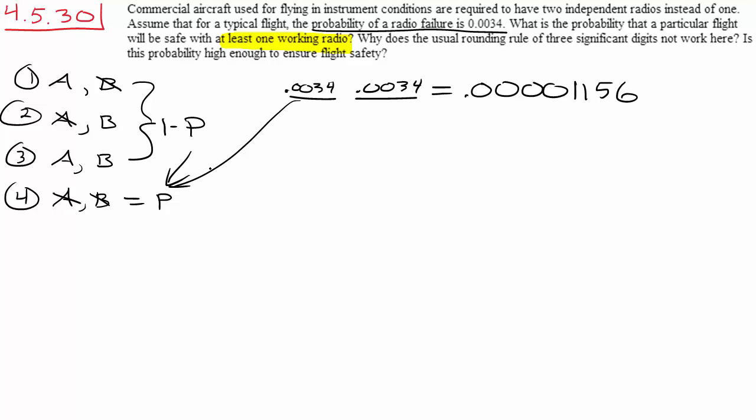So remember that's this probability, but we want the probability that at least one of them works, so it's going to be one minus that. So we're going to do one minus 0.0000001156, and that's going to equal 0.9999998844.